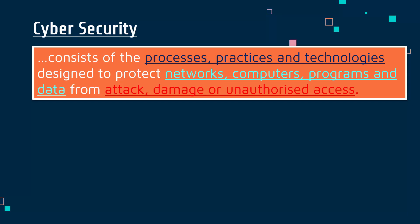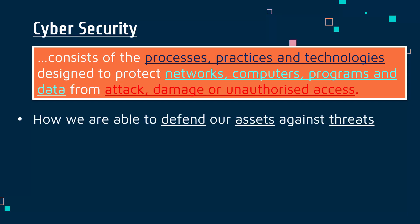In the turquoise color, we have networks, computers, programs and data. These are what we call assets — important items or concepts. Sometimes, if it's intellectual property, we are trying to protect these. We can shorten all of these to 'systems,' a system being any combination of these. In red, we have the consequences: an attack which will cause damage or will involve unauthorized access. The one-line summary of this whole unit is thinking about how we are able to defend our assets against threats.